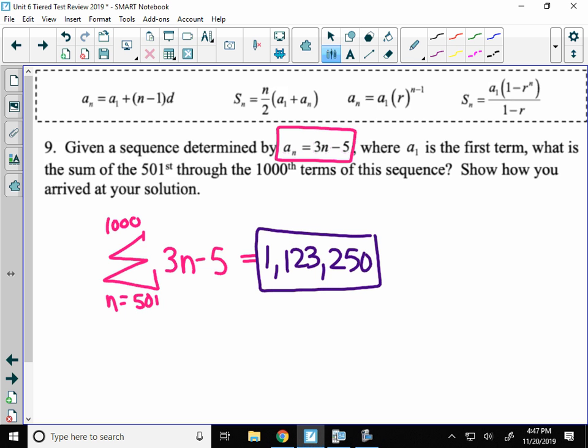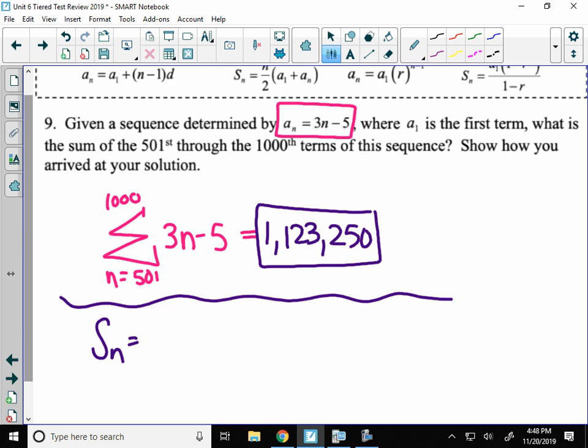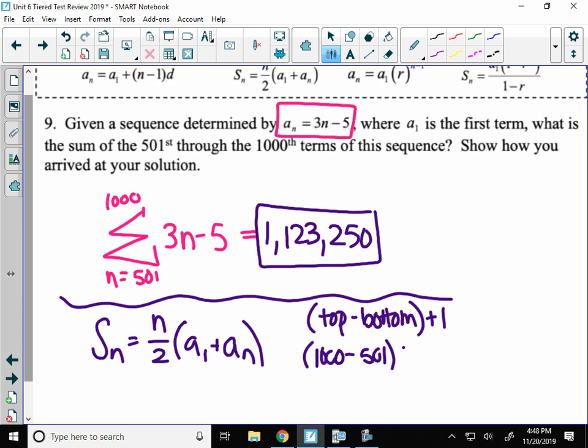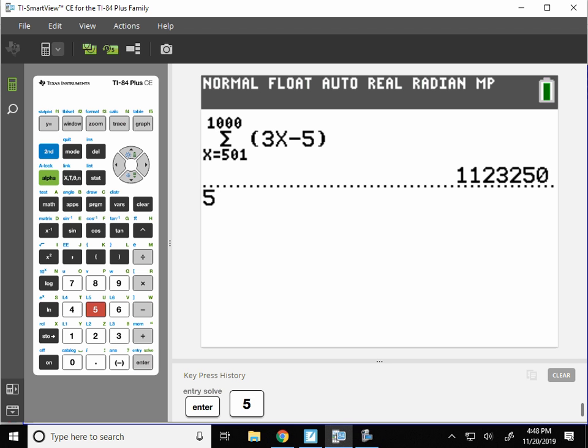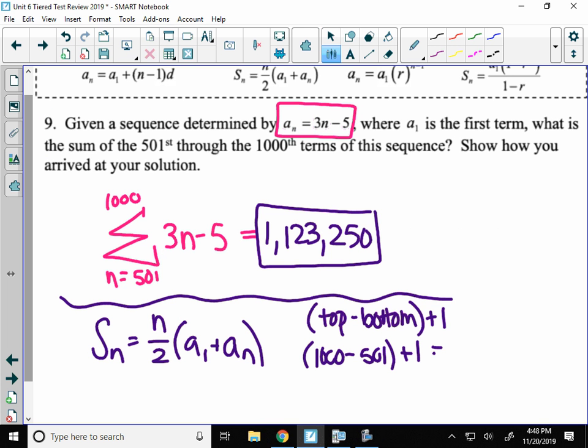Now that was fast if you thought to use sigma notation. So that would be 1,123,250. Now if you did not think to use sigma notation, that's okay. You can do this a different way. It's just going to take longer. You could use the S_n formula here. The only thing is if you use this one, you just have to use a little bit more work. So we would find, you have to find the number of terms, what n is. Remember we talked when we did sigma notation that n is the top index minus the bottom index plus 1. So here that would be the top index. Even if you didn't have sigma notation, you know the top number is 1,000 minus 501 plus 1.